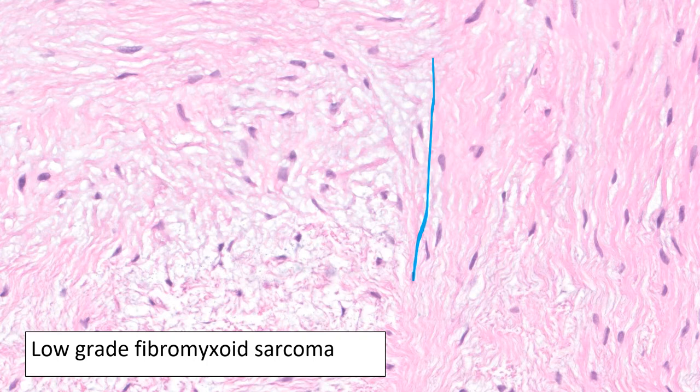Some low-grade fibromyxoid sarcomas can appear more atypical, more epithelioid, but that is the exception to the rule. The vast majority of low-grade fibromyxoid sarcomas look incredibly bland, as shown in this example.